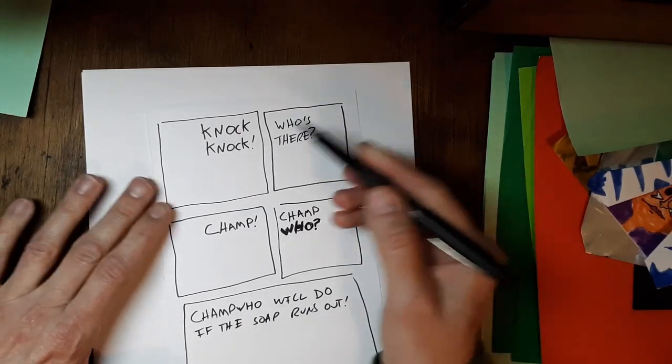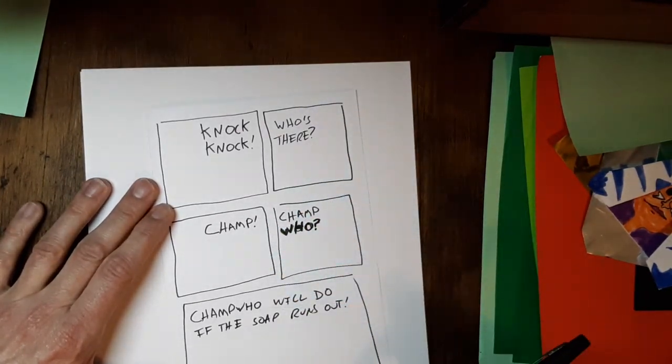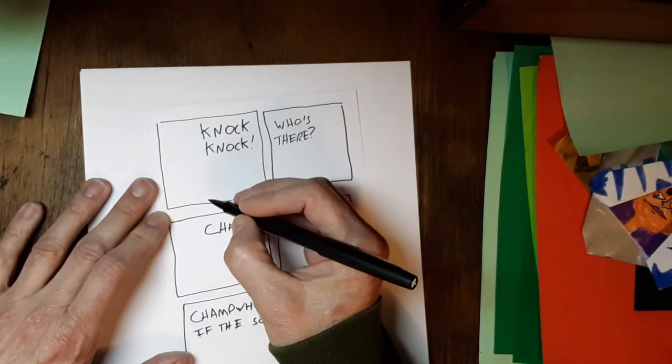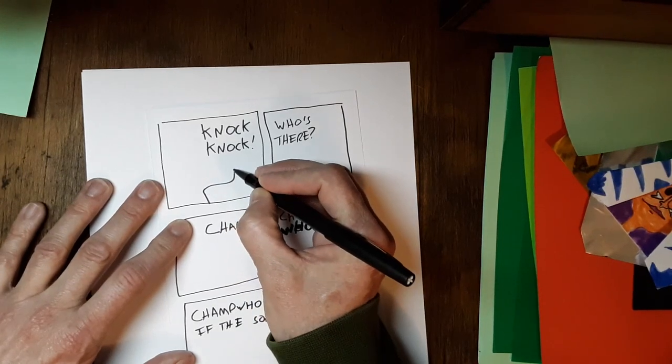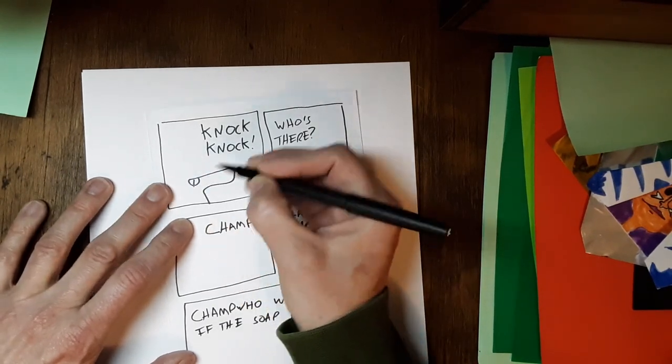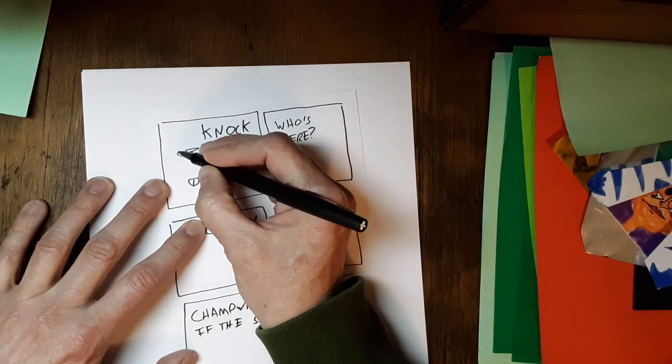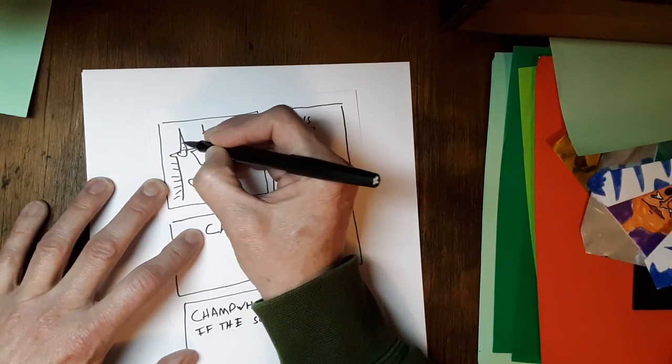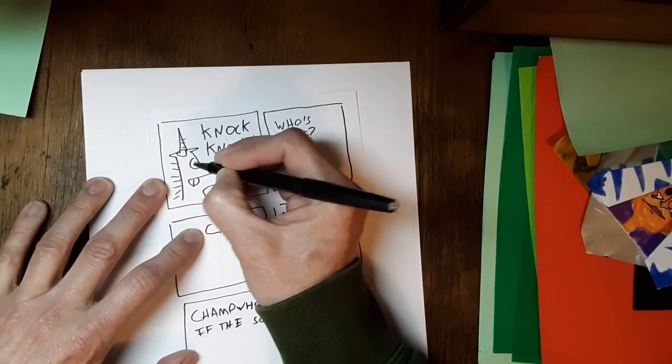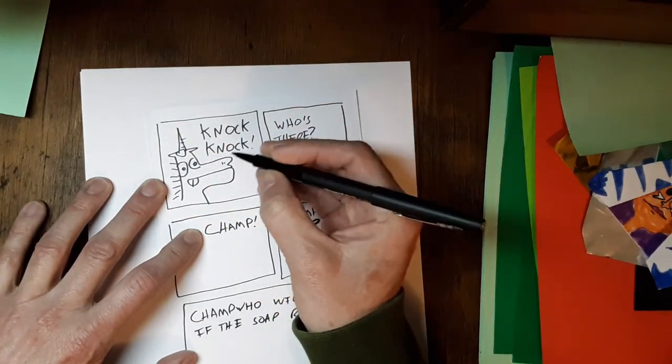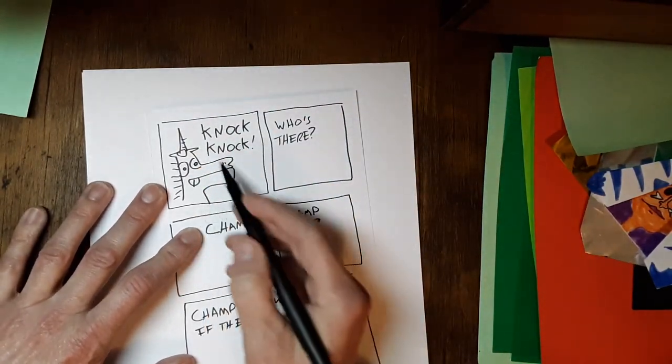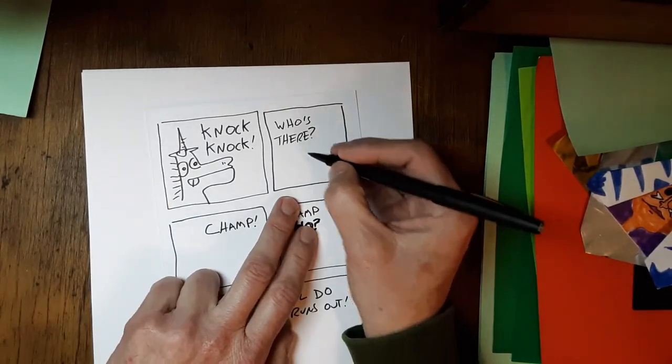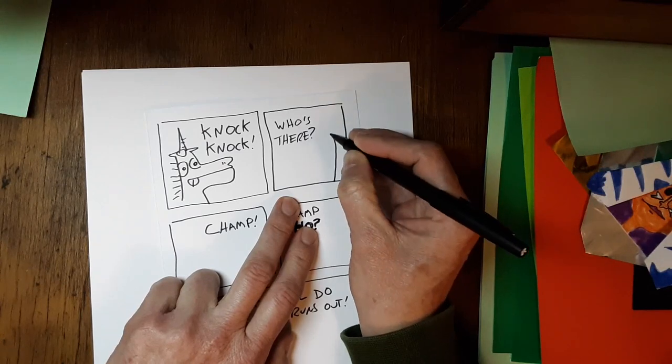Except for those interrupting cow versions. So, here's what we've got. Knock-knock, who's there, champ, champ who, champ who will do if the soap runs out. Okay. Anybody can do that with their own knock-knock joke. If you've got one that's better, please be my guest. So now we're going to go through and we're going to draw our characters in here. This character is going to be my unicorn character. Draw whatever characters you like. It doesn't even have to be a character.